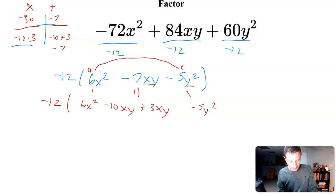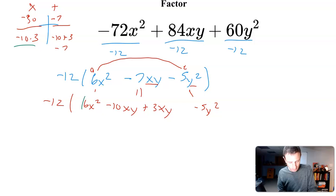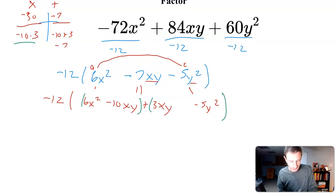From here we can factor by grouping. I'm going to ignore the -12 for a second. I'm going to group the first two, group the second two. From the first two, I could factor out a 2x, leaving me - I'm dividing each of these two terms by 2x - leaving me with 3x - 5y.